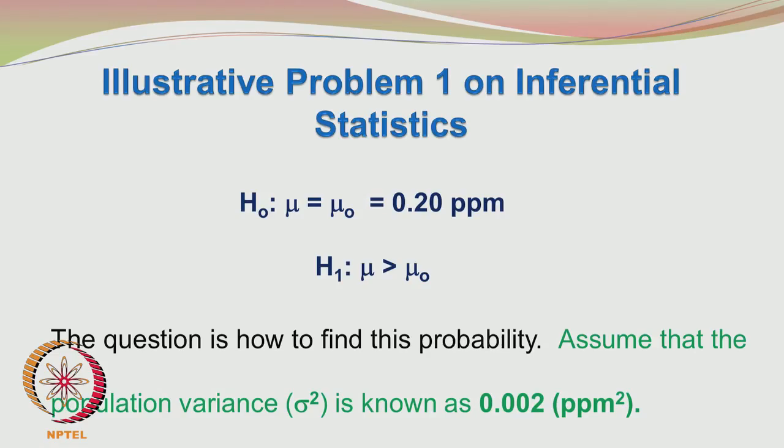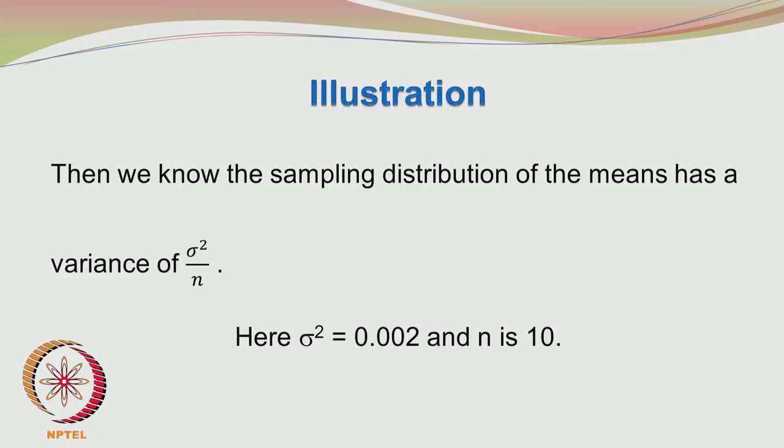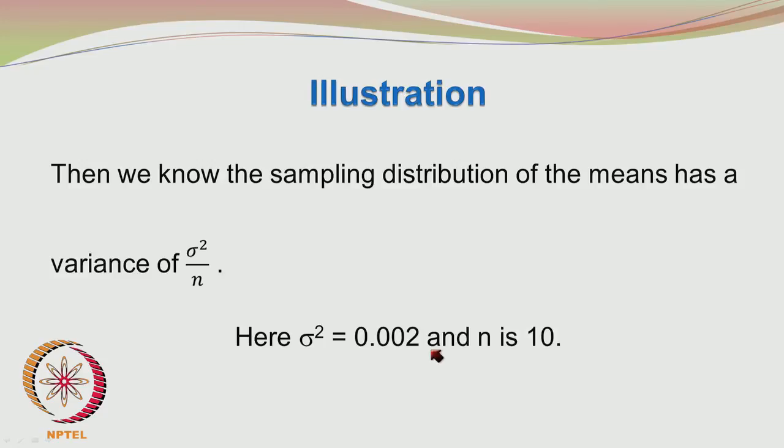Usually the variance is also not known to us, but if the process manufacturer states that impurity levels have a variability of 0.002 ppm squared, we take that as sigma squared. We have a speculated value mu0 = 0.2 ppm and population variance sigma squared = 0.002 ppm squared. The sampling distribution of the means has variance sigma squared by n, centered around mu, but with reduced spread — here sigma squared = 0.002 ppm squared and n = 10.